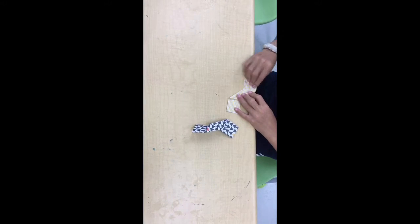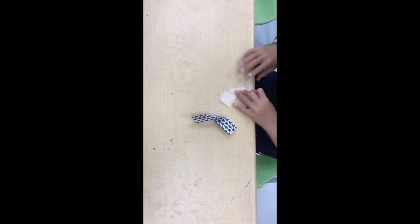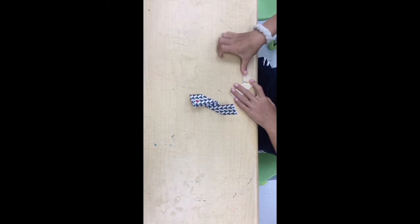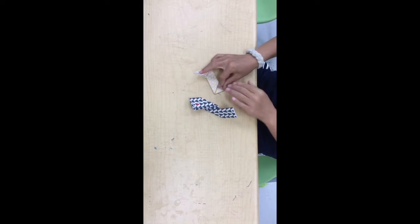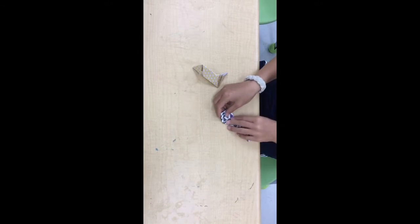You're going to fold both sides of this extra part so that it looks like this. And then you're going to do the same to the other one.